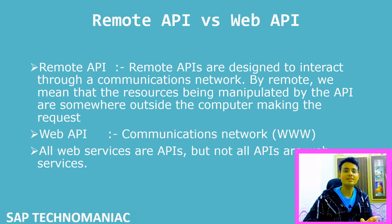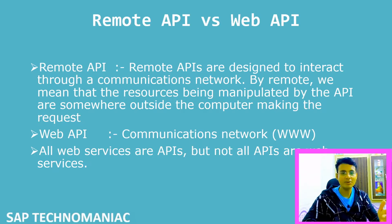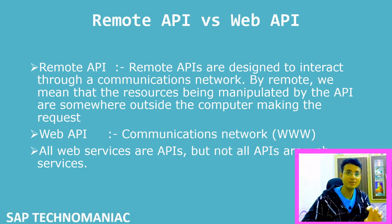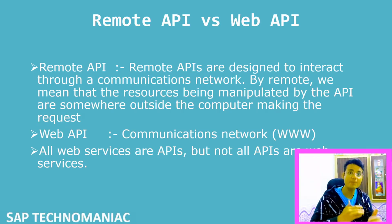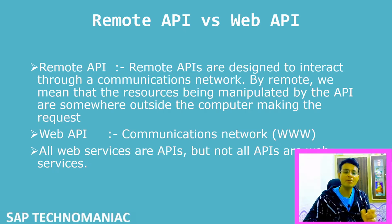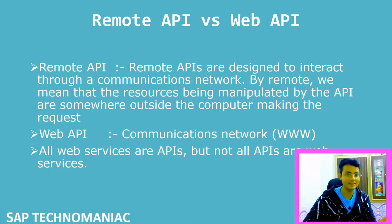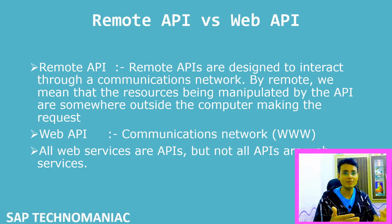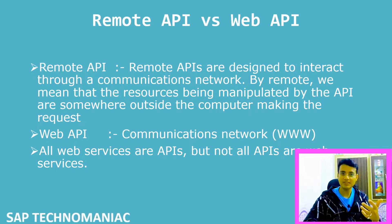But a web API is a little bit different from a remote API because a web API communicates over the internet instead of communicating through a local network or some other way. It will always communicate through the World Wide Web — it will always communicate through the internet. So a web API is also part of the remote API, but the communication network will be different. The communication method will always be the internet. That is the basic difference between web API and remote API. Sometimes we also call web API a web service because it is giving some services over the web.